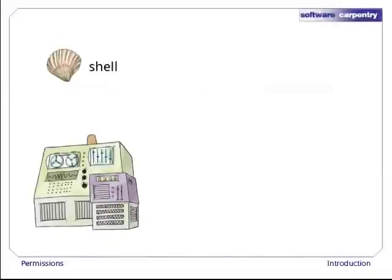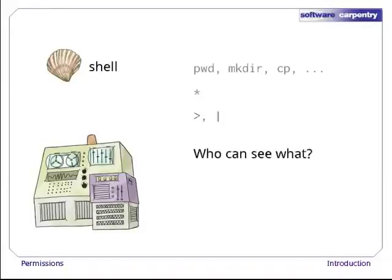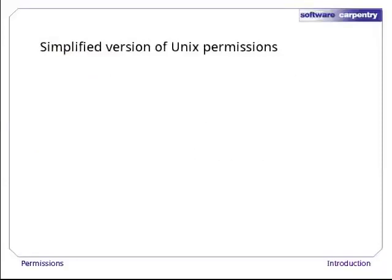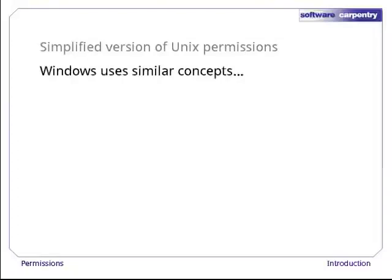In the previous episodes in this lecture, we looked at how to use a command shell to interact with a computer, and met a few commonly used commands such as pwd, mkdir, and cp. We also met the wildcard character star, and saw how to redirect output with greater-than, and create pipes with pipe. It's now time to look at how Unix determines who can see the contents of which files, and how it controls who can change those files and run particular programs. We'll give a simplified overview and defer discussion of how Windows manages permissions until the end of the episode.